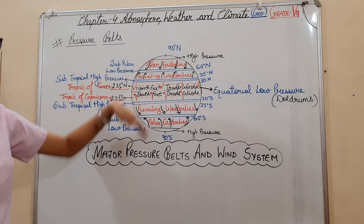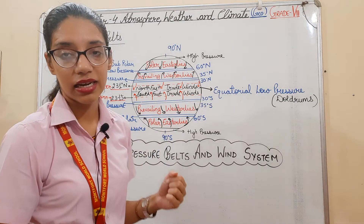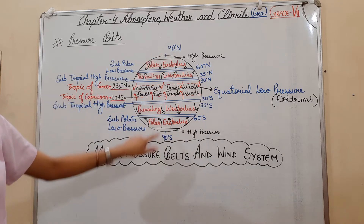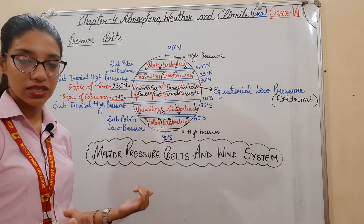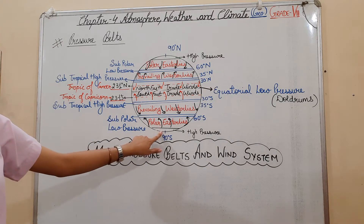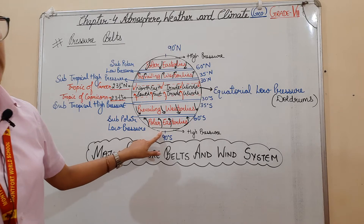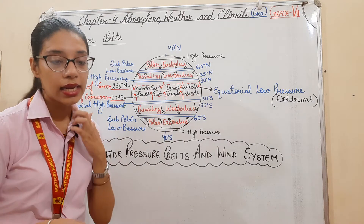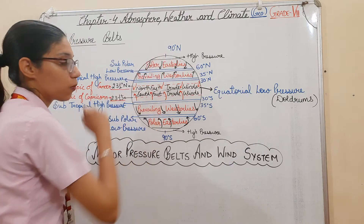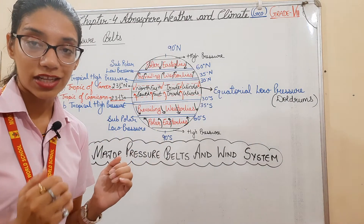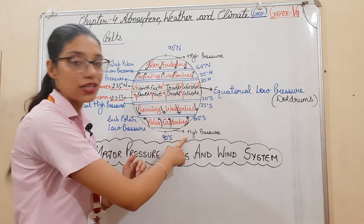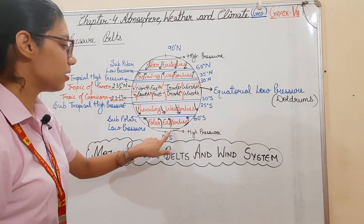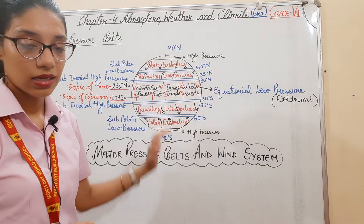In the polar areas, low temperature results in cold, heavy air that creates high pressure. These areas around the south pole and north pole are known as polar high pressure regions or polar high pressure belts.